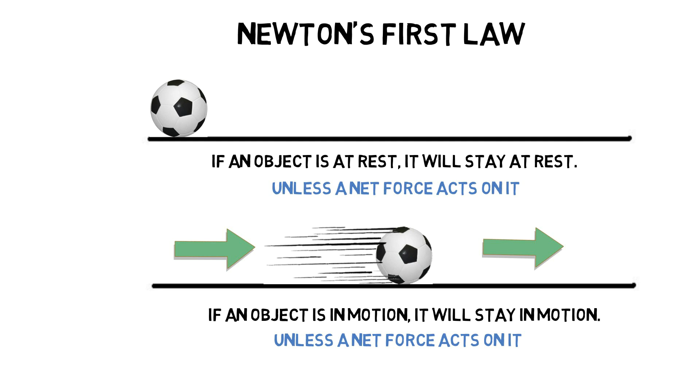For example, the soccer ball, when kicked, keeps going forward until friction, a person, or another object like a goal post stops it. When a soccer ball is resting on the ground, it will stay like that until someone kicks it or another force acts upon it.